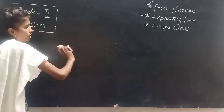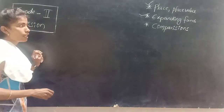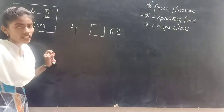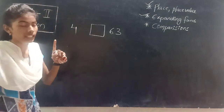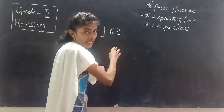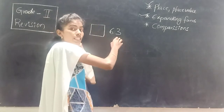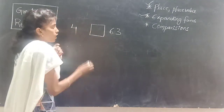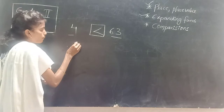Next, comparison. We have to compare the numbers and say which is big and which is small according to the place value. See, 4 and 63. 4 is a single digit number and 63 is a double digit number. In 4 we have only one digit, in 63 we have 2 digits. Double digit number is always bigger than the single digit number. So single digit number is smaller than the double digit number.